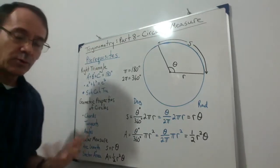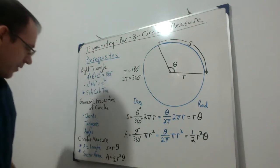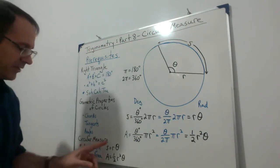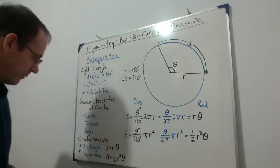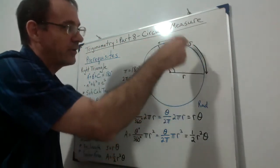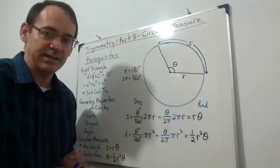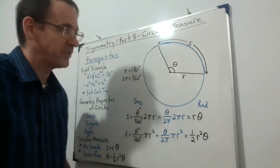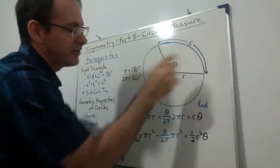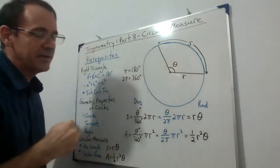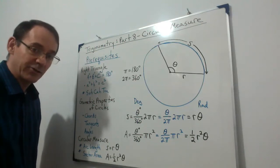The last prerequisite is circular measure itself — arc length and sector area — and it only uses the radians formulas in Pure Maths 1. Arc length, represented by the letter s, is the length of the part of the circumference you're dealing with. Sector area is like a piece of pie coming from the center of the circle out to the arc — that's called a sector. All of this should have been learned back in IGCSE, around grade nine.